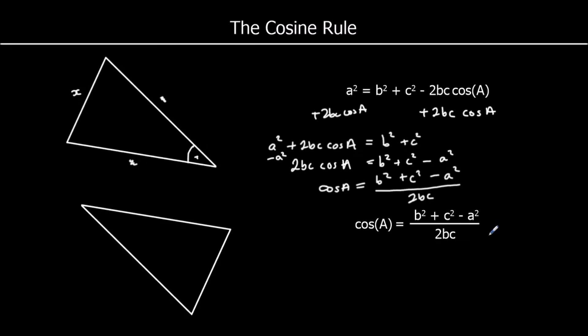So this is the formula for working out an angle. We can find an angle in a triangle when we know all three of the sides. Let's have a look at how this works.